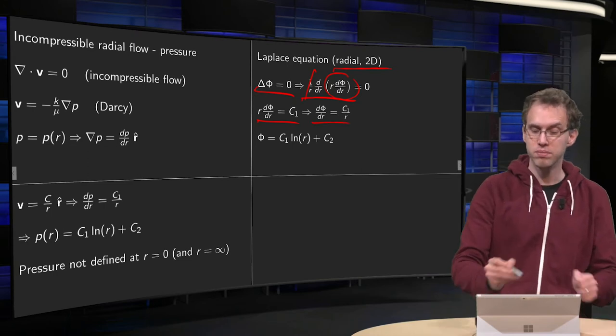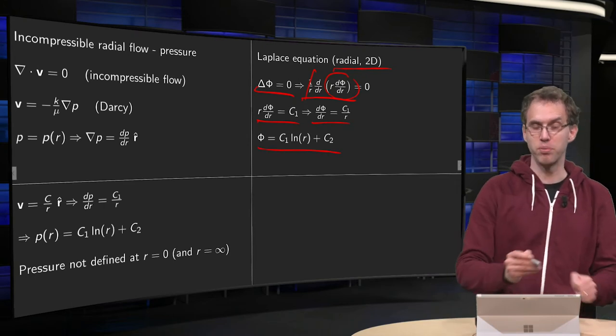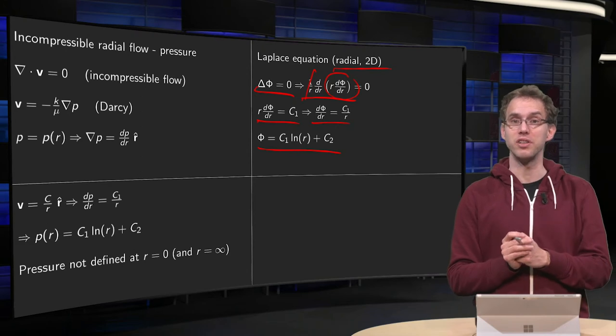Divide by r, d phi d r equals constant over r, and integrate once more, you see phi equals constant times ln of r plus another constant.